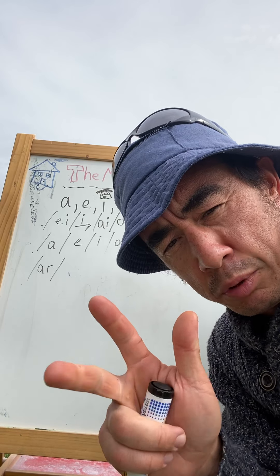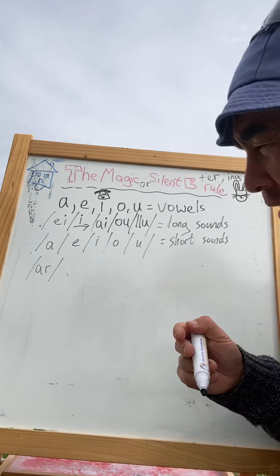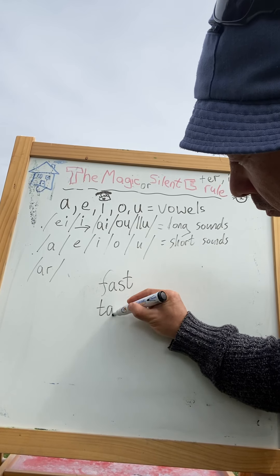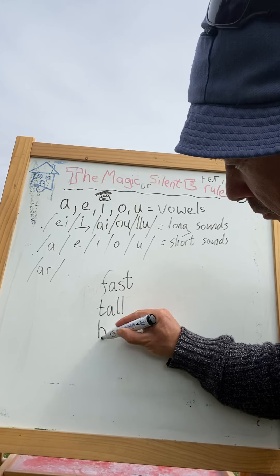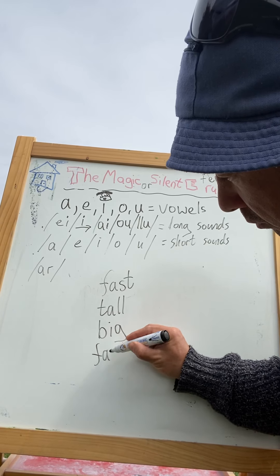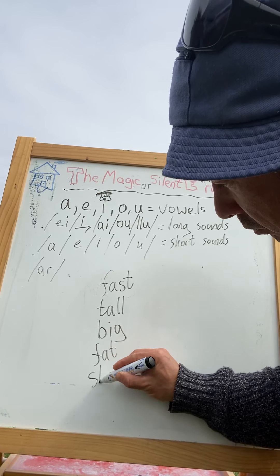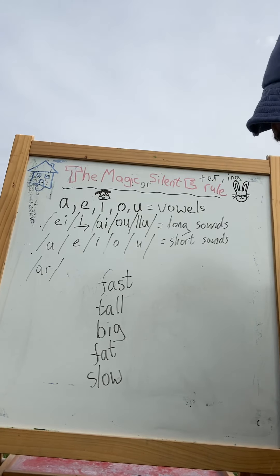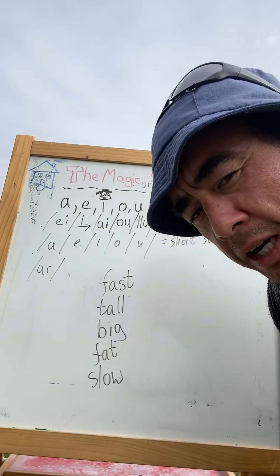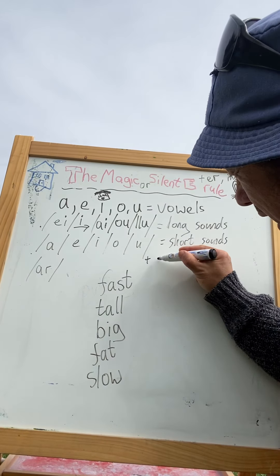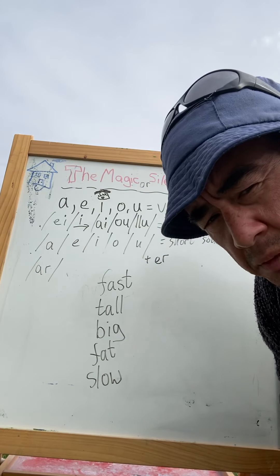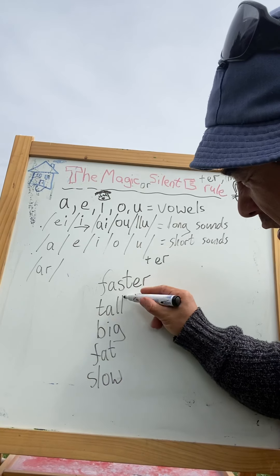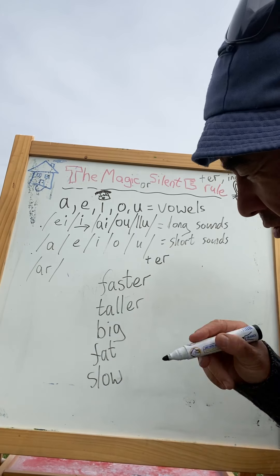What about one-syllable adjectives? Let's look at some of them. Fast, what do we do to make it into a comparative? Add e-r. Fast becomes faster, that's fine. Tall becomes taller, that's great.